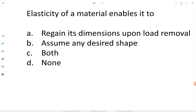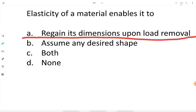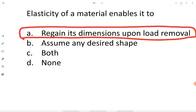Next question: elasticity of a material enables it to do what? Elasticity means regaining its dimension upon load removal. When an object is able to reassume its dimensions when the externally applied load is removed, that property is known as elasticity. The size, shape, and dimension properties of the material are regained when loading is removed. Assuming any desired shape is not related to elasticity.